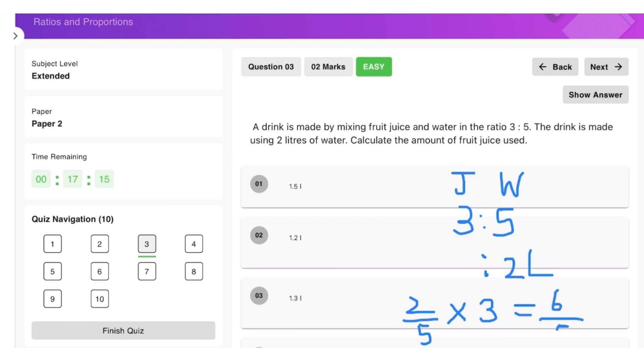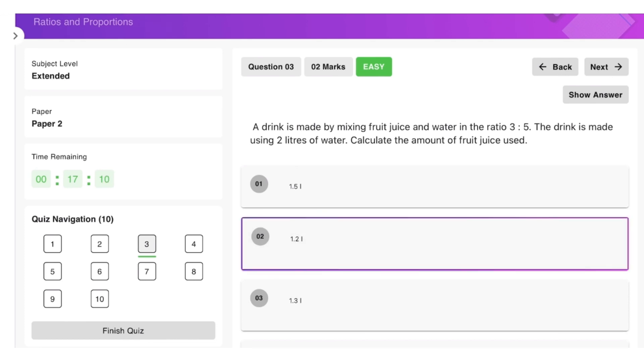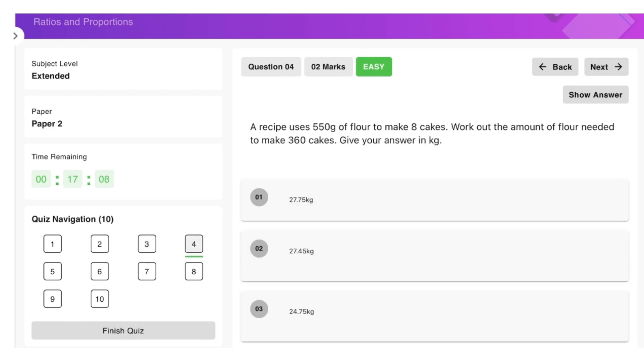Okay, and next one: a recipe uses 550 grams of flour to make 8 cakes. Work out the amount of flour needed to make 360 cakes. Okay, so basically we have 550 grams of flour to make 8 cakes, and now we want to make 360 cakes. So we have to figure out from 360—how much is that? That is basically 45 times more.